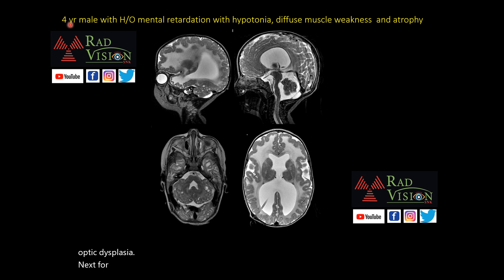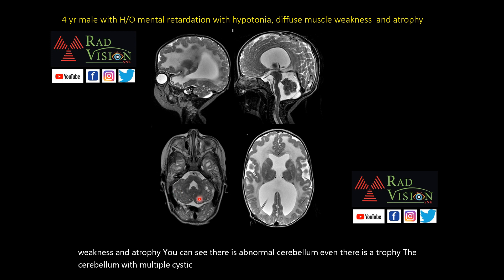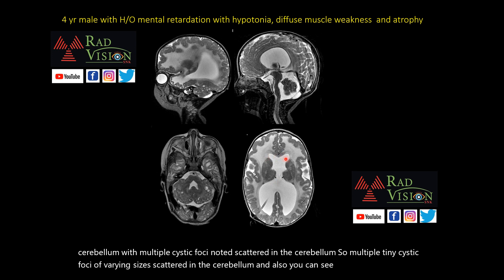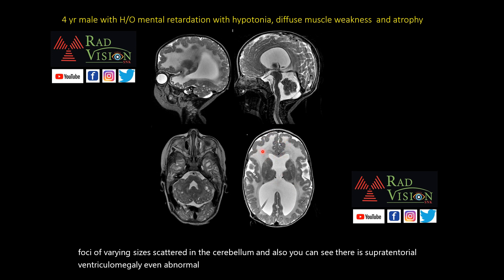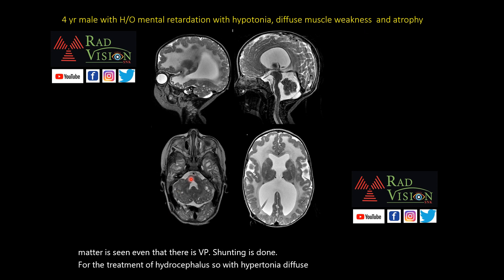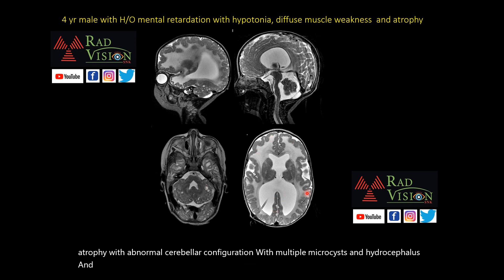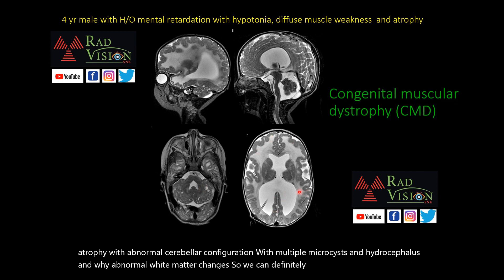Next case: a 4-year male with mental retardation, hypotonia, diffuse muscle weakness, and atrophy. There is atrophy of the cerebellum with multiple tiny cystic foci of varying sizes scattered in the cerebellum, supratentorial ventriculomegaly, abnormal hyperintense enlarged white matter, and VP shunting done for hydrocephalus. This combination of findings allows us to definitely suspect congenital muscular dystrophy.